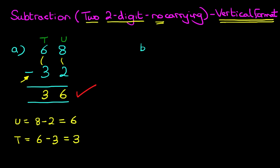Okay, let's have a look at our second example. This time we've got 97 minus 74.